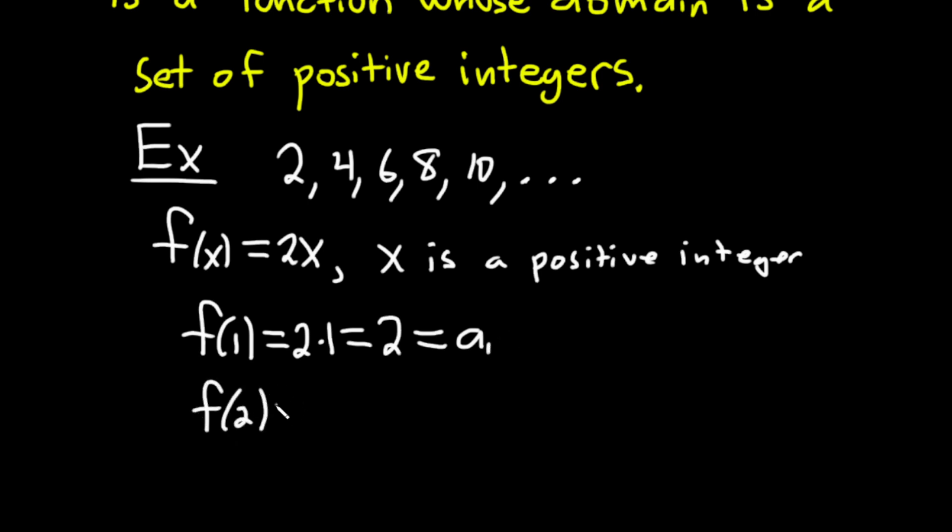F of 2 would be 2 times 2, which is 4. This would be your second term, A sub 2.